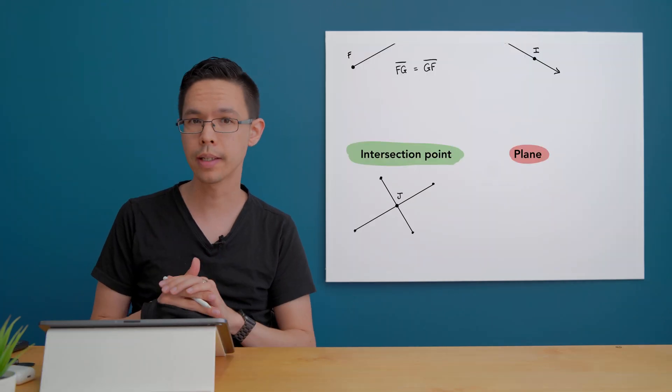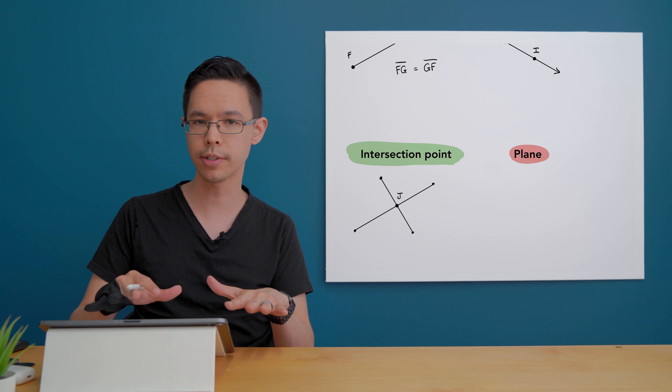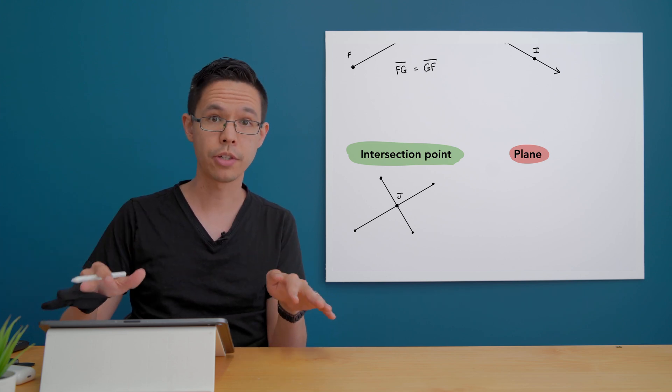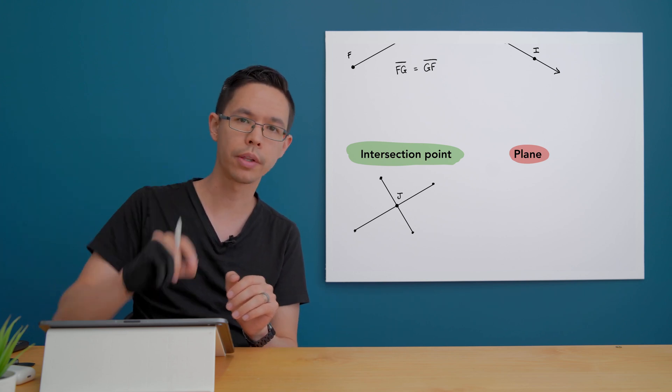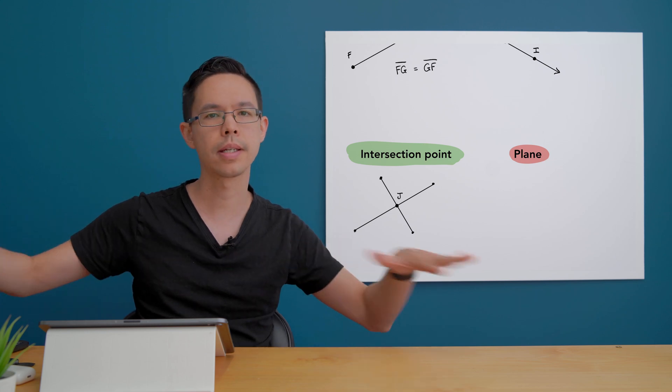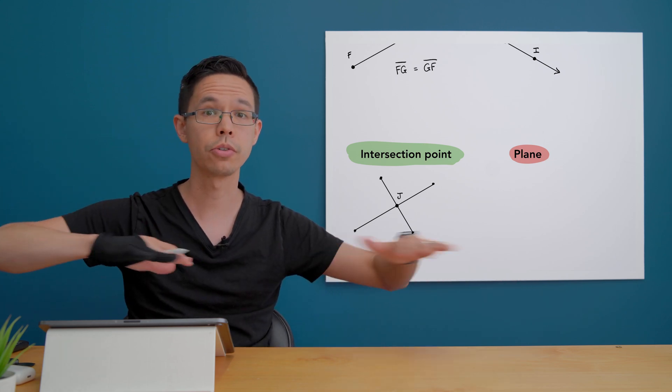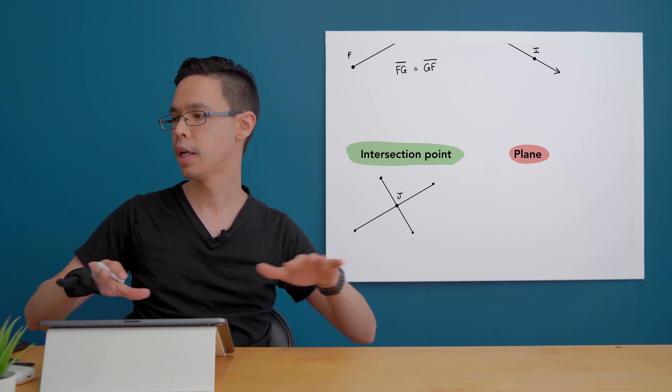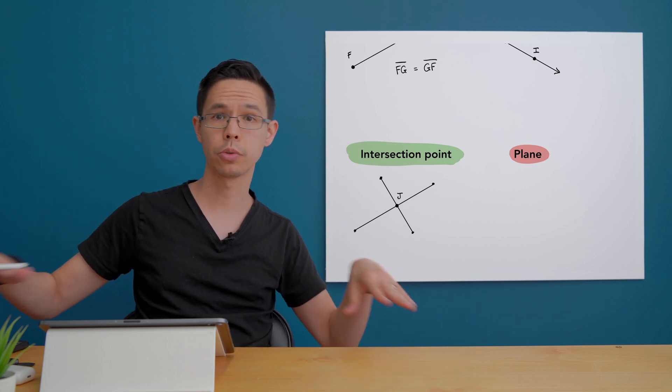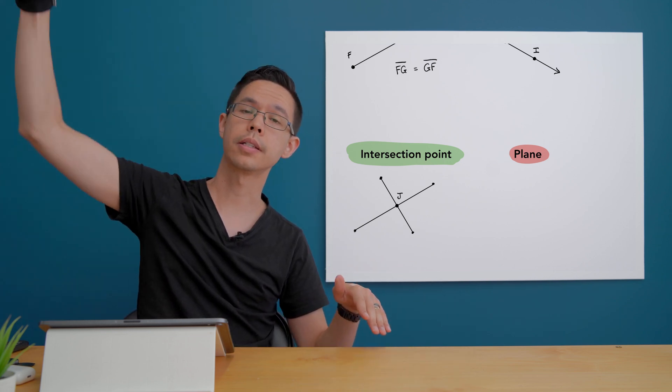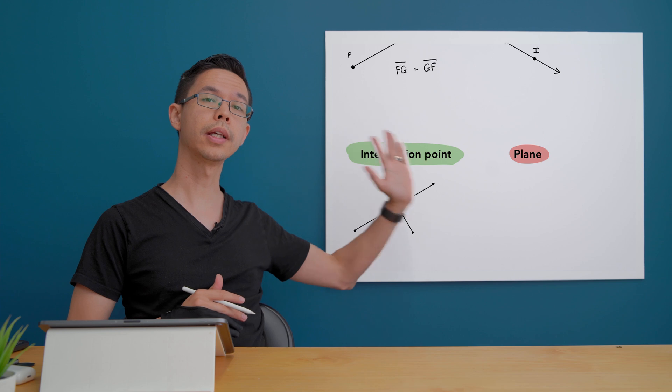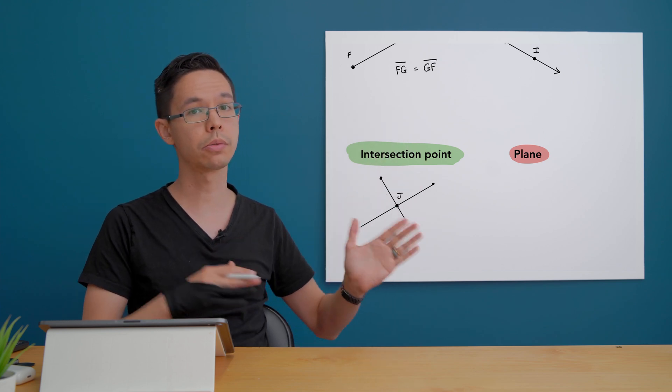Our next one is plane. A plane is a flat surface so you can imagine it's two-dimensional and it has zero thickness and it basically extends forever in a two-dimensional area. So usually like the floor you would refer to as a plane, a ceiling is a different plane, this wall here would be a different plane.